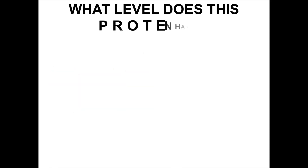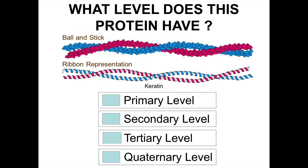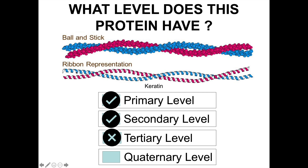Now let's look at a specific protein and determine what levels it has. Does it have primary level? Yes — every protein has its own amino acid sequence. Does it have secondary level? Yes — based on the ribbon representation, we can see it is made up of alpha helix structure. Does it have tertiary level? No — tertiary level only occurs if the protein folds into a globular structure. This protein, keratin, does not form a globular structure; it forms a fibre. Does it have quaternary level? Yes — keratin is made up of the association of more than one polypeptide chain.